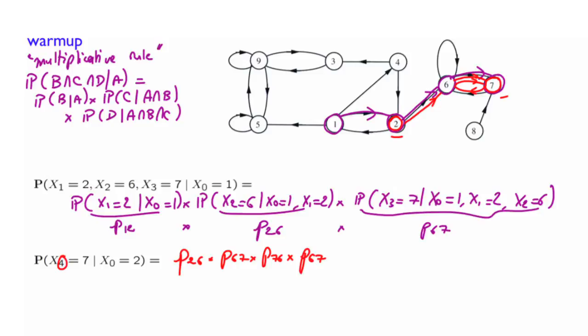What would be another path? Well, from 2 you could, instead of going to 6, you could go to 1 in one transition. Then you go back to 2, then you go back to 2, then you go to 6, and then right up to 7. So essentially here what we have is plus P₂₁ times P₁₂ times P₂₆ times P₆₇.